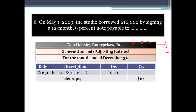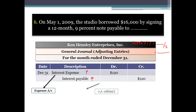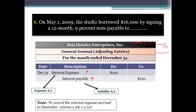The interest expense is $120 debit. Since we have not paid it, these are unpaid expenses — we credit interest payable instead of cash. The journal entry is: Interest Expense debit $120 and Interest Payable credit $120. Interest expense represents an expense account and interest payable represents a liability account. This is to record the interest expense accrued in December.